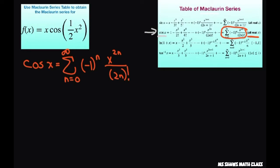So when we just do cosine of one half x squared, I'm just going to substitute in for x. So this is going to be the sum n equals zero to infinity, and we're going to have negative one to the power of n, and then we're going to have times...